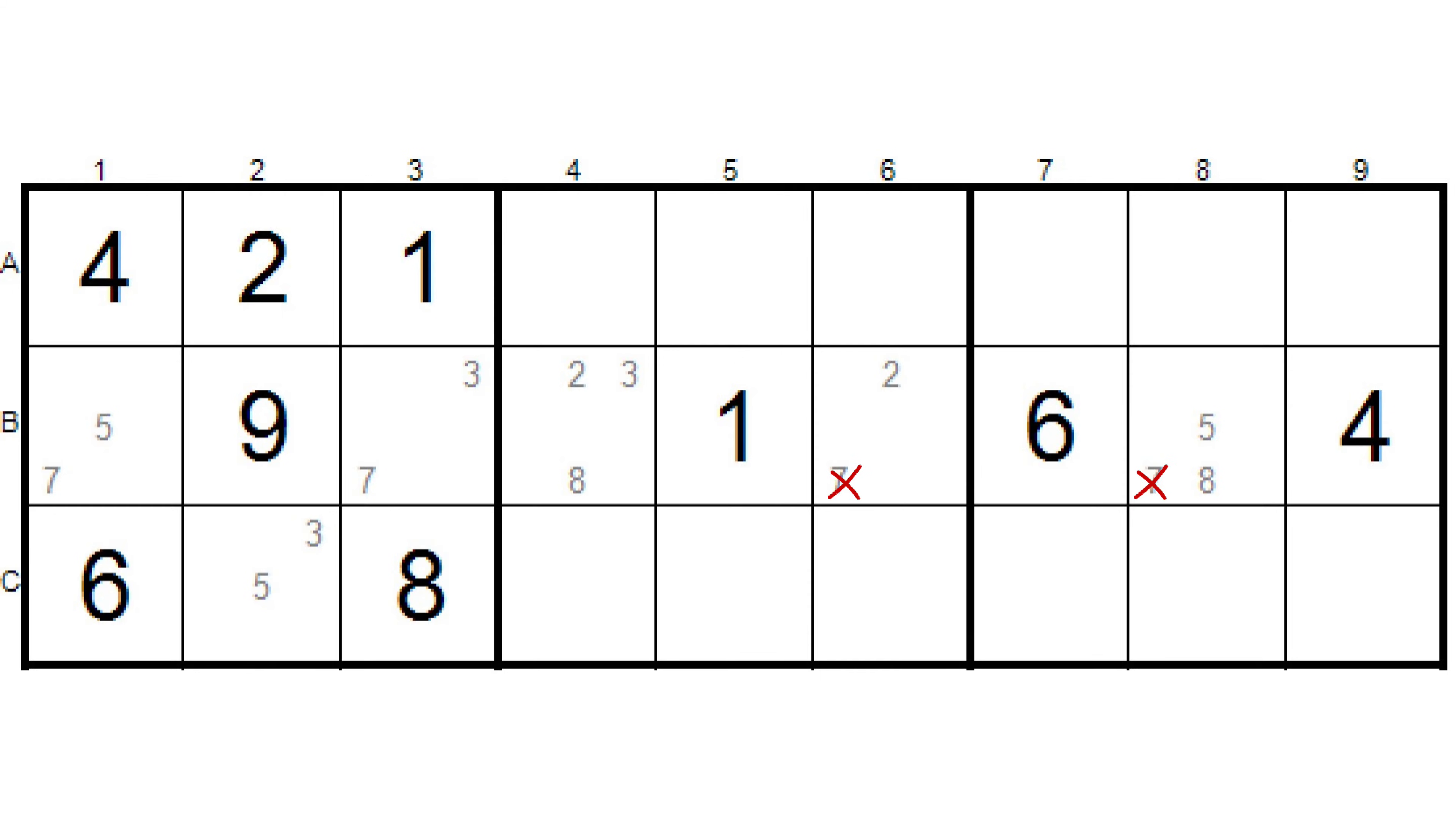Since the only place in block 1 that can contain a 7 is in one of these two cells in row B, we don't know which cell, but we know it's in one of these, then there can't be another 7 in the same row, so we can go ahead and cross off all the other 7s in row B.